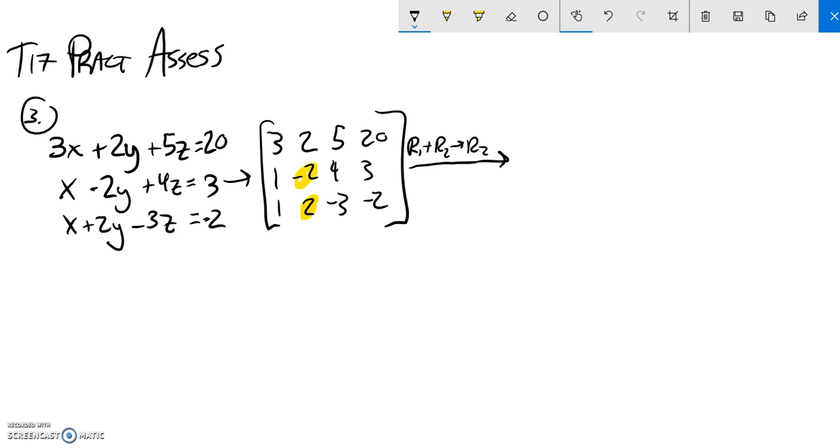The other thing I can do is if I want to get rid of this one, I could just add row two to row three. So row two plus row three, and I'm going to put that into row three.